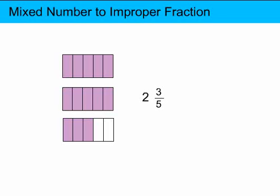But the same amount can also be represented by the total number of fractional parts as an improper fraction. And in this case, if you add up the fractional parts, you have 5 plus 5 plus 3, which is 13, and they're fifths. So as an improper fraction, this same amount could be represented as 13 fifths.